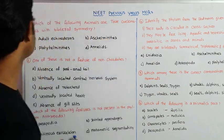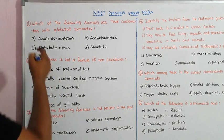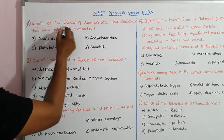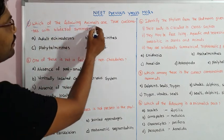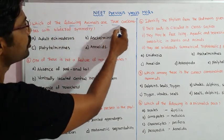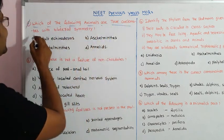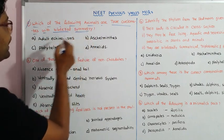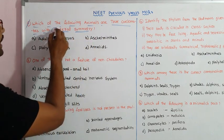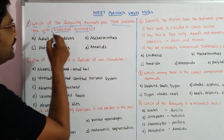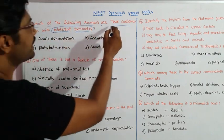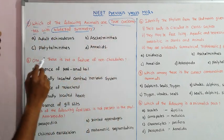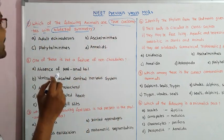In the first question: Which of the following animals are true coelomates with bilateral symmetry? We need to find animals that have both bilateral symmetry and a true coelom.